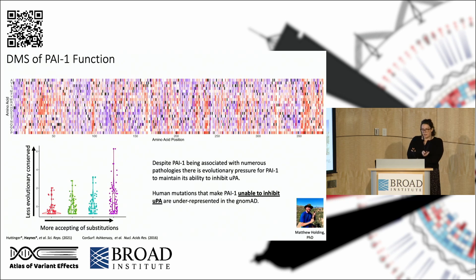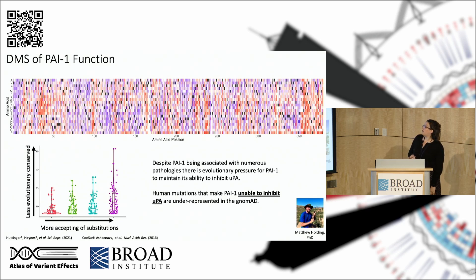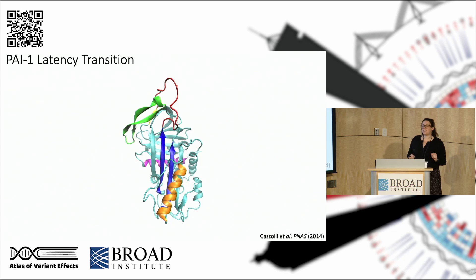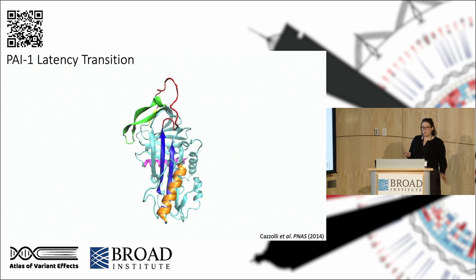Likewise, human mutations that make PAI-1 unable to inhibit UPA are underrepresented when we look at the gnomAD database. Now, PAI-1 exists in this metastable active conformation, but it's actually really unique among the serpin family because it will transition to its actual lowest energy state conformation in the absence of a proteolytic event. This is very unique to PAI-1, and we don't know the reason behind this latency transformation.